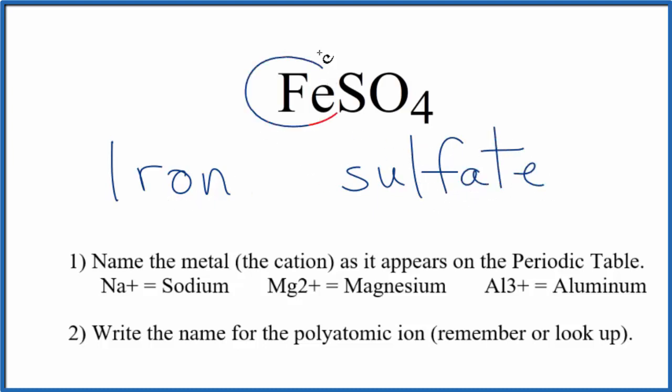But iron, that's a transition metal and it can have a different charge dependent on what it's bonded to. So here it's bonded to the sulfate ion and the whole sulfate ion has an ionic charge of 2 minus. I really do recommend you memorize the sulfate ion.